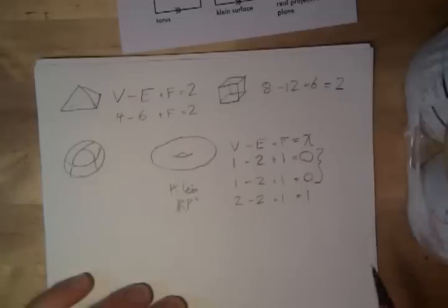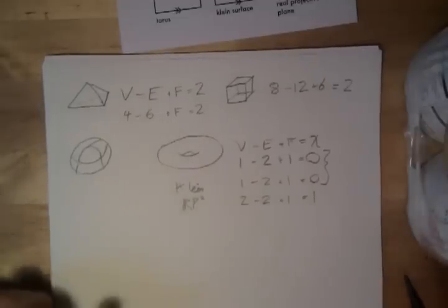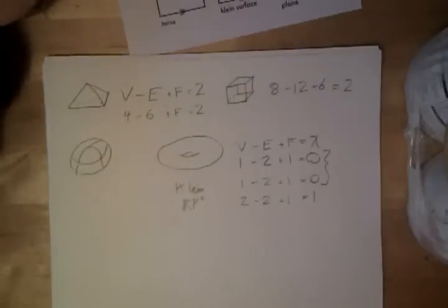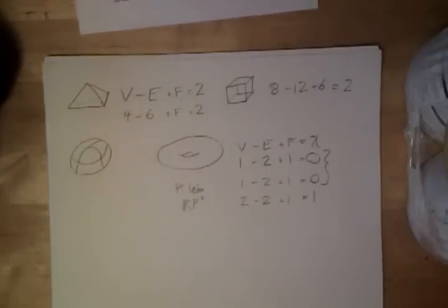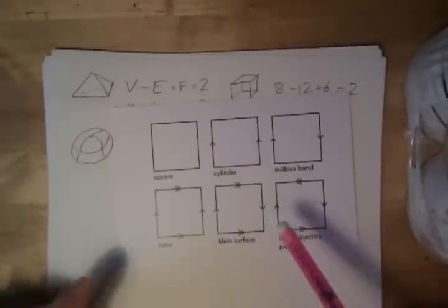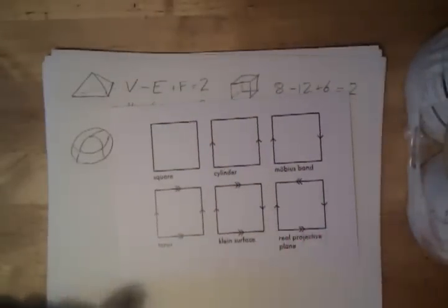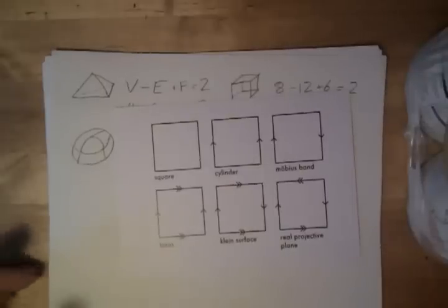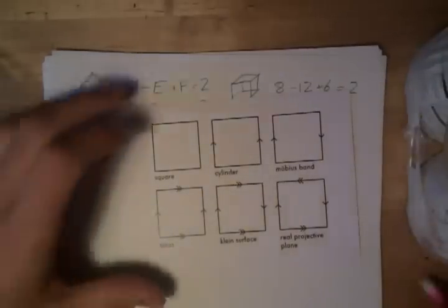But it isn't as good an invariant as we'd like, because the Klein bottle and the torus have the same Euler characteristic, and they're not equivalent. They're not homeomorphic to each other, because the Klein surface is non-orientable. It's not possible to define a well-defined notion of what's the outside and what's the inside, because it only has one side. Whereas with the torus, we can. We can say, this is the outside, this is the inside, and be consistent about it.